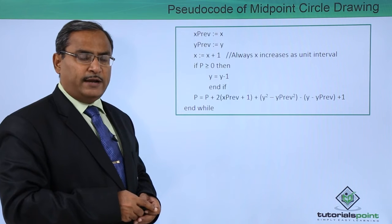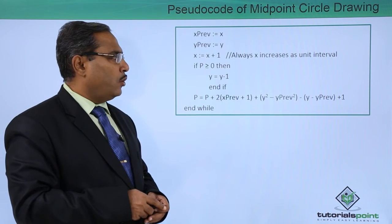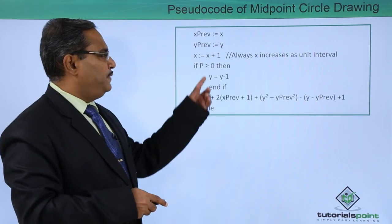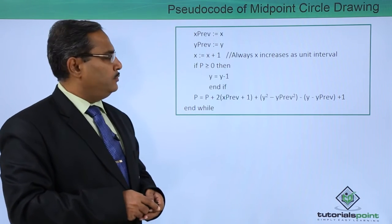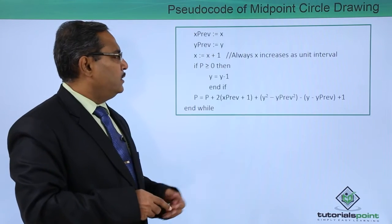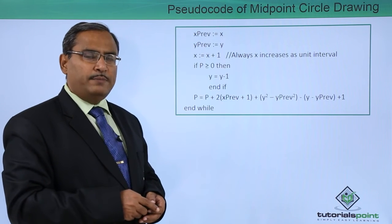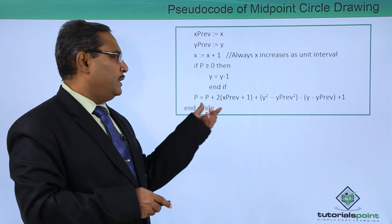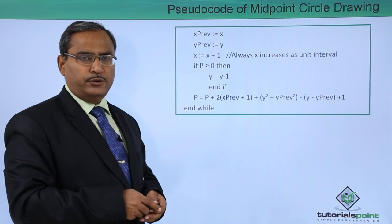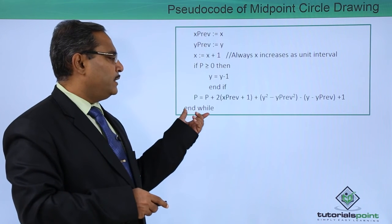xPrev equals x and yPrev equals y. x equals x plus 1 - x will always be increased with unit interval. If p is greater than or equal to 0 (we know initially we put p as 1 minus R), then y equals y minus 1, end if. That is the end of this condition, and this is the new value of p which will be calculated and used in the next iteration. This is our end while.